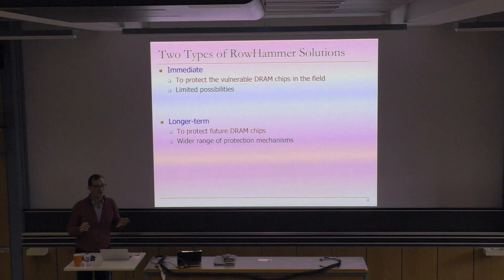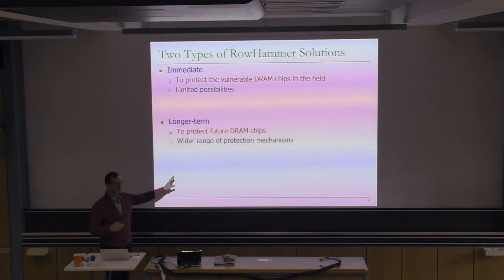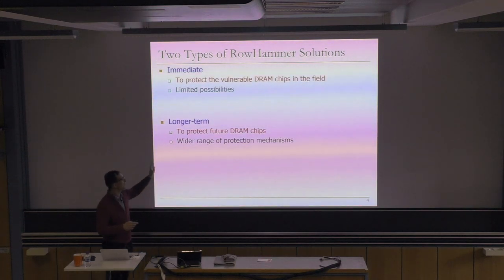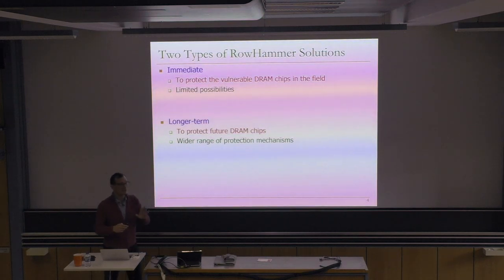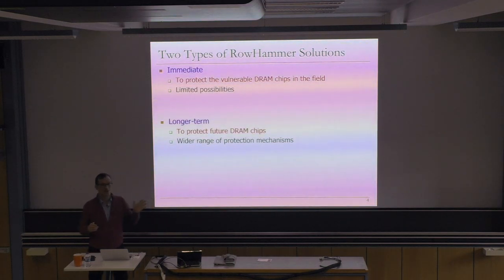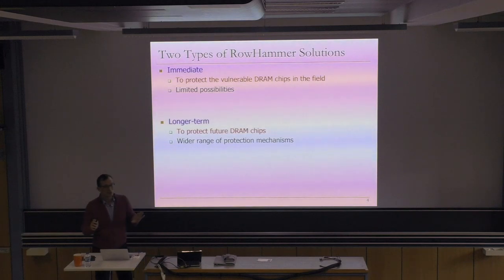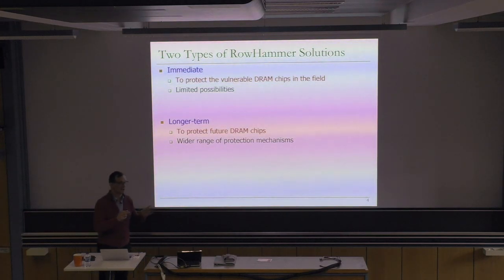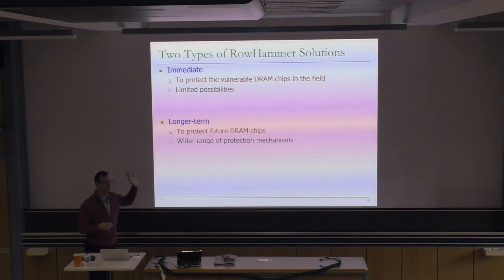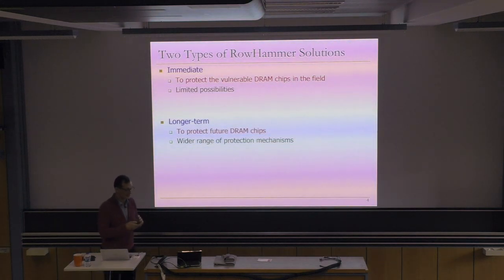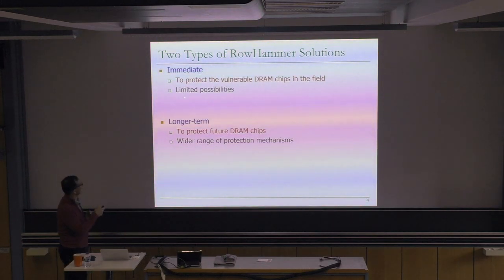For example, if we had a reconfigurable memory controller out in systems, perhaps we could reconfigure it to do something different when it sees many activates to some rows. But we don't have that. Memory controllers today do scheduling with very rigid principles — first ready, first come, first serve — prioritizing row hit requests over others. That's baked into hardware, you cannot change it. There's almost no programmability in the memory controller today. If you had a programmable memory controller, you could run code in it and implement a Rowhammer solution. But that doesn't exist today — that's why these immediate solutions have limited possibilities.